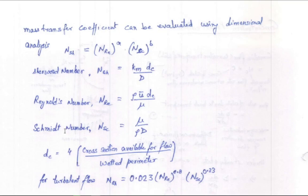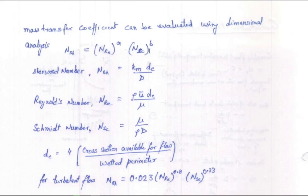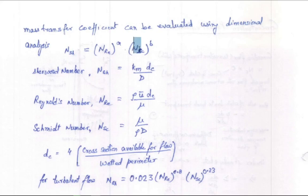Membrane processing is essentially a mass transfer problem, so we use mass transfer equations. We use the Sherwood number, Reynolds number, and Schmidt number. This equation is analogous to the Dittus-Boelter equation in heat transfer — where Nusselt number was a function of Reynolds and Prandtl numbers — but in mass transfer we use the Sherwood number in place of Nusselt, and Schmidt number in place of Prandtl. The Sherwood number is a function of Reynolds and Schmidt numbers: Sh = A·Re^m·Sc^n.